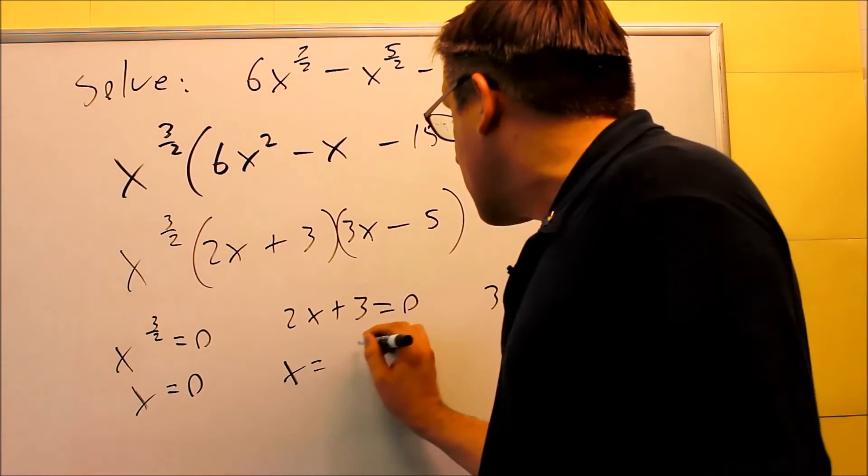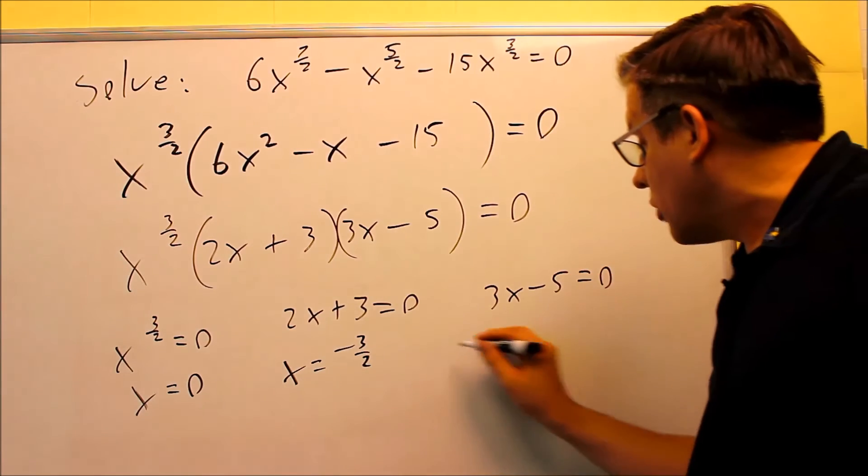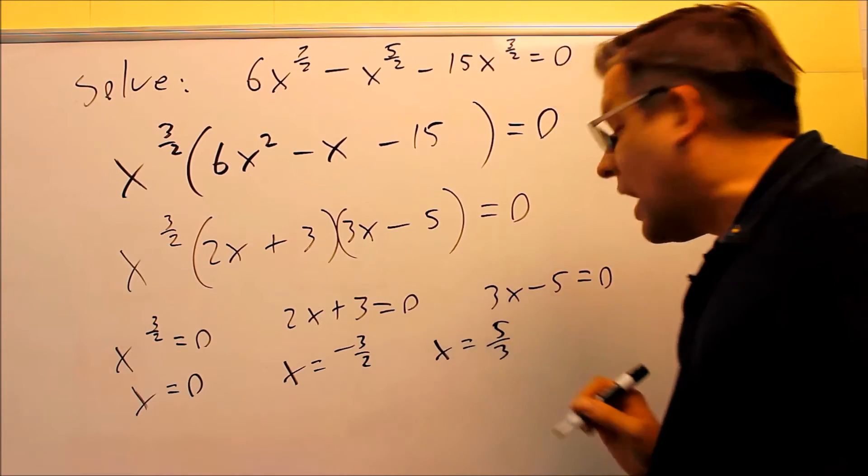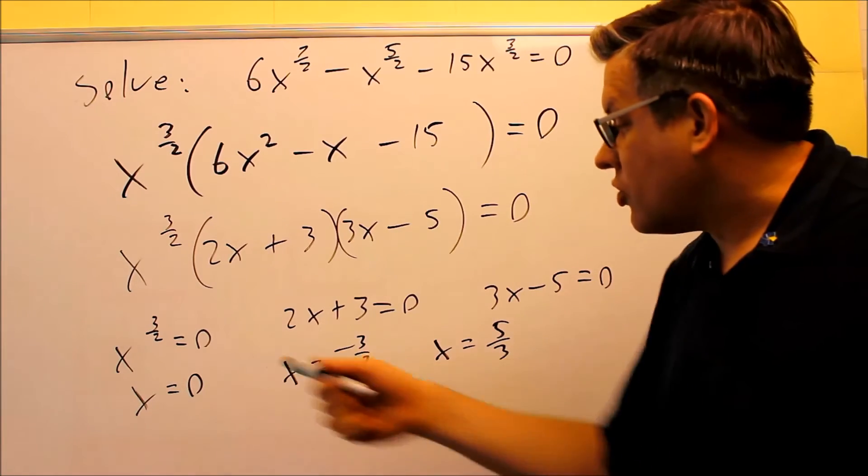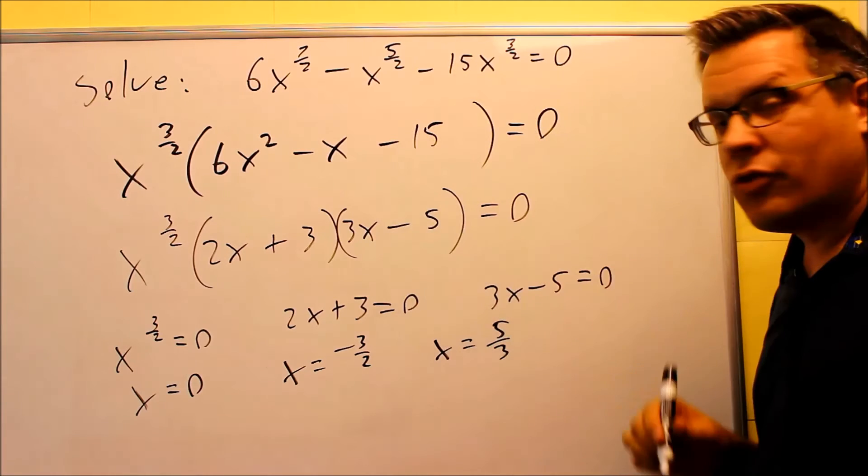For this one, if you solve that, you'll get negative 3 halves. For the last one, when you solve it, you're going to get positive 5 thirds. So 0, negative 3 halves, and 5 thirds. Those would be your three answers for this problem.